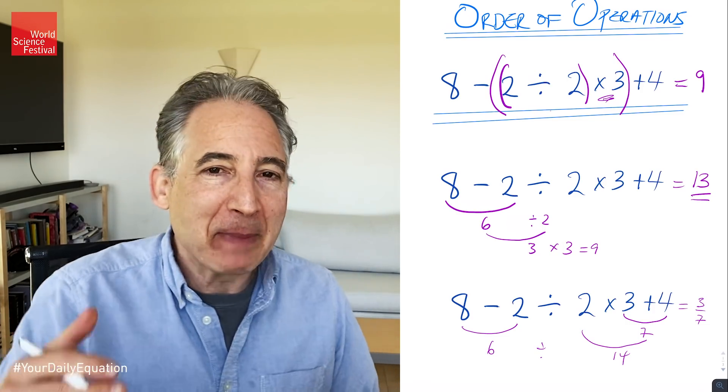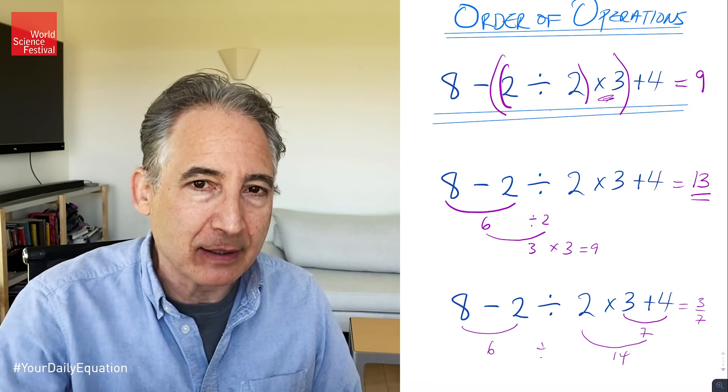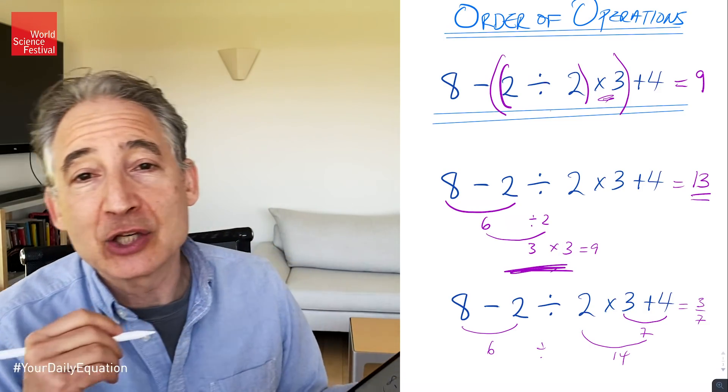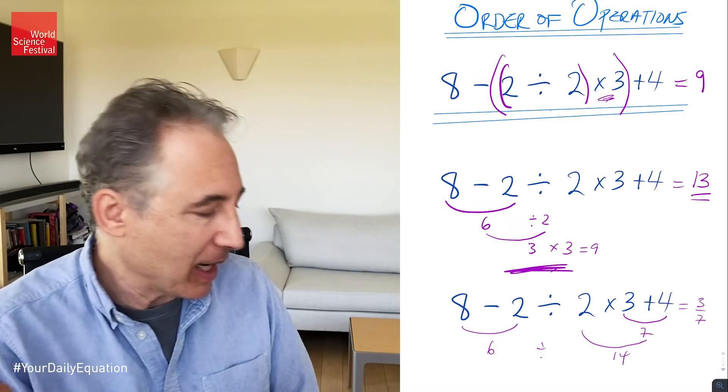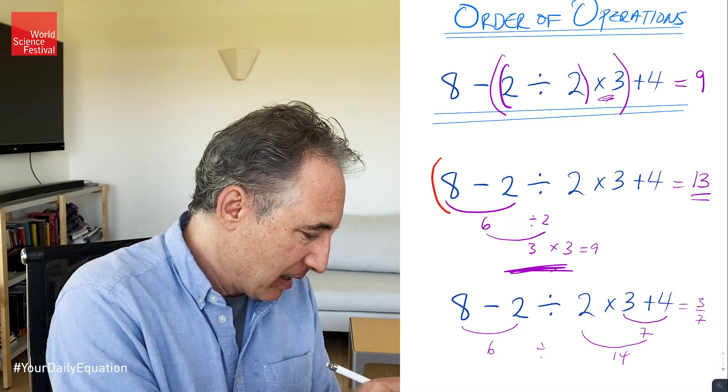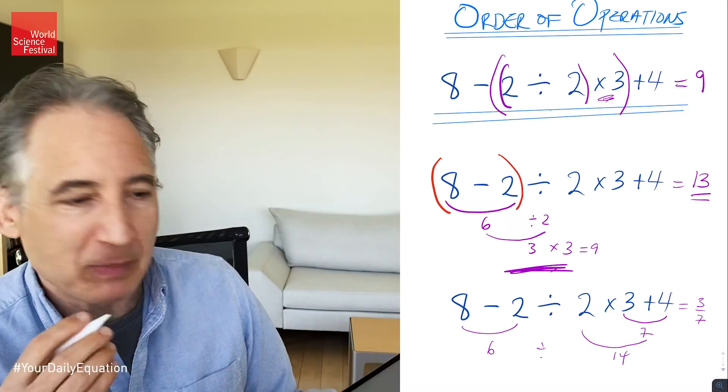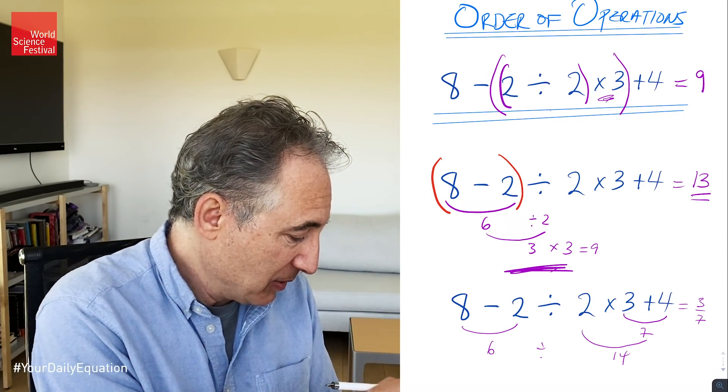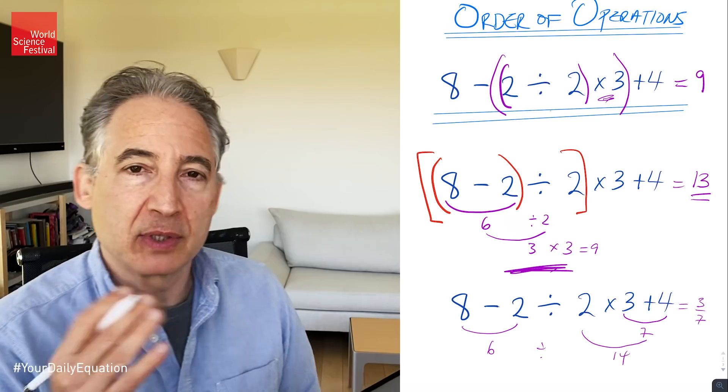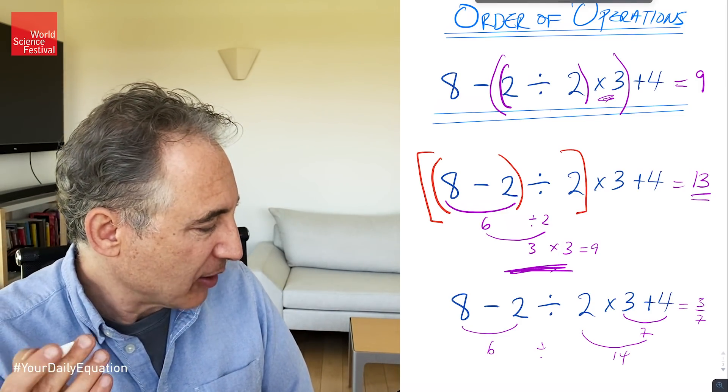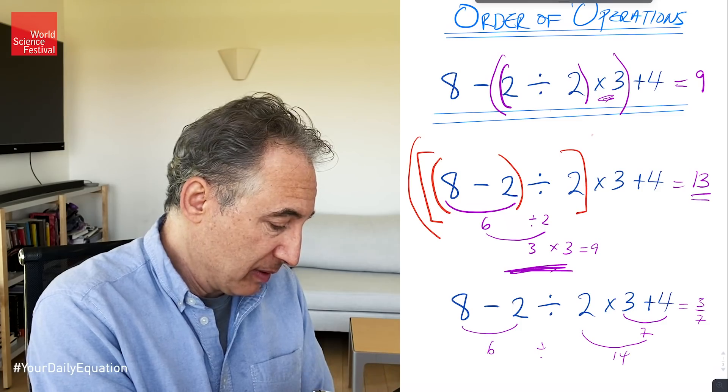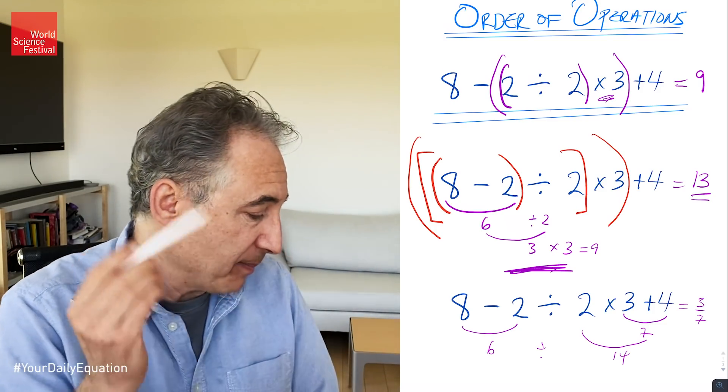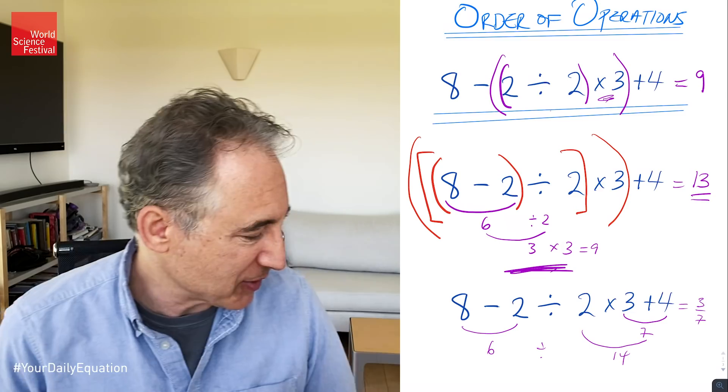We simply use parentheses to make it very precise and clear what it is that we mean with our mathematical sentences. And indeed, if the second interpretation is the one that the graduate student had in mind, the graduate student would simply write 8 minus 2 with some nice parentheses around it. And then, if the dividing by 2 was meant to happen next, they could put another parentheses, and to make it more clear, they could put a square bracket around it. And then, if we wanted to be even more precise, we could say the times 3 is next with those parentheses, and then we would add our 4.